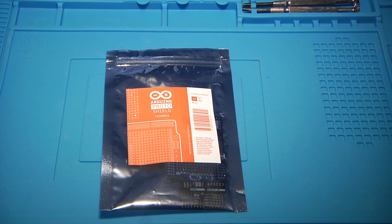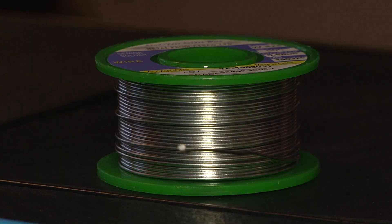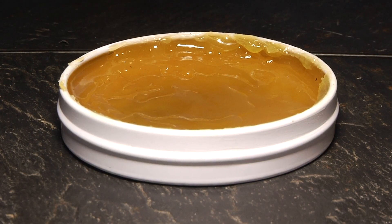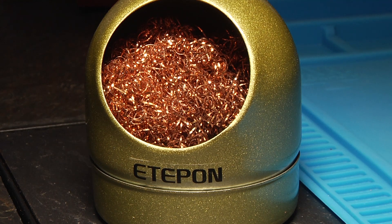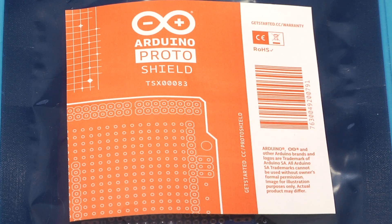Here's what you'll need: a soldering iron, solder, flux paste, and copper or brass wool. This is the Arduino proto shield.